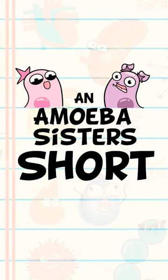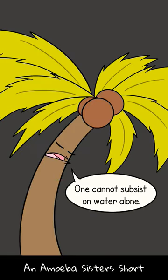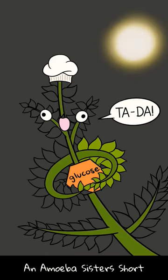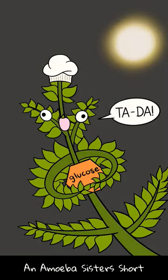Welcome to Amoeba Sisters Short. Is your plant hungry? Most know that plants make their own food. Plants use the process of photosynthesis to ultimately make a carbohydrate food — glucose. It's a sugar. Glucose is the plant's food.